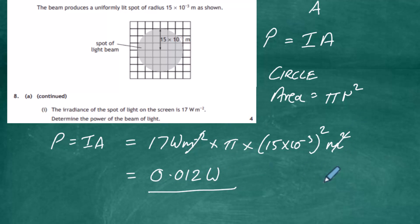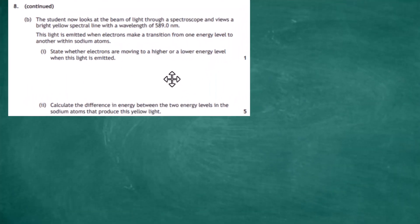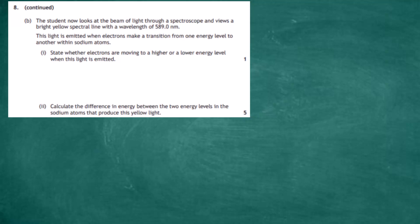Question 8 continued, part b. The student now looks at a beam of light through a spectroscope and views a bright yellow spectral line with a wavelength of 589 nanometers. The light is emitted when electrons make a transition from one energy level to another within the sodium atoms. For one mark: state whether the electrons are moving to a higher or lower energy level when the light is emitted.